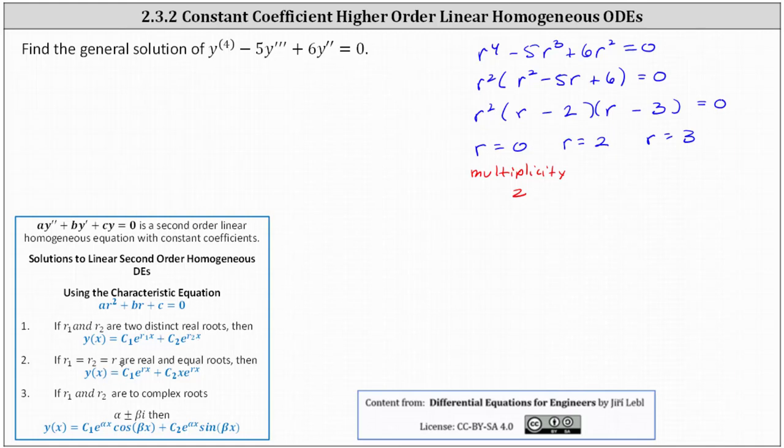And number two, when we have two real equal roots, the general solution is y of x equals c sub one e to the power of r x plus c sub two times x e to the power of r x. Notice the extra factor of x in the second term.